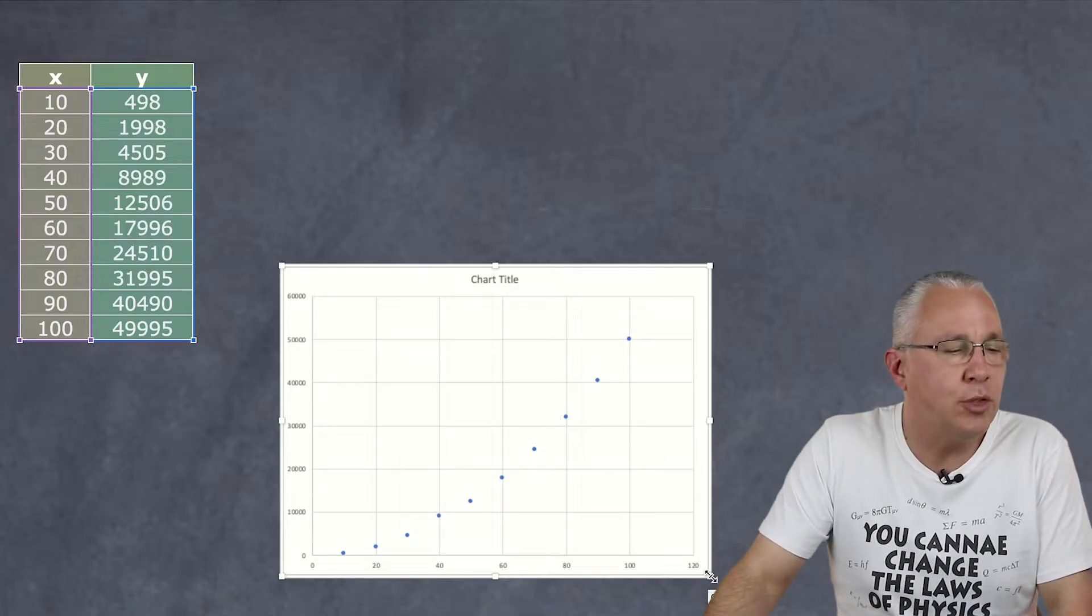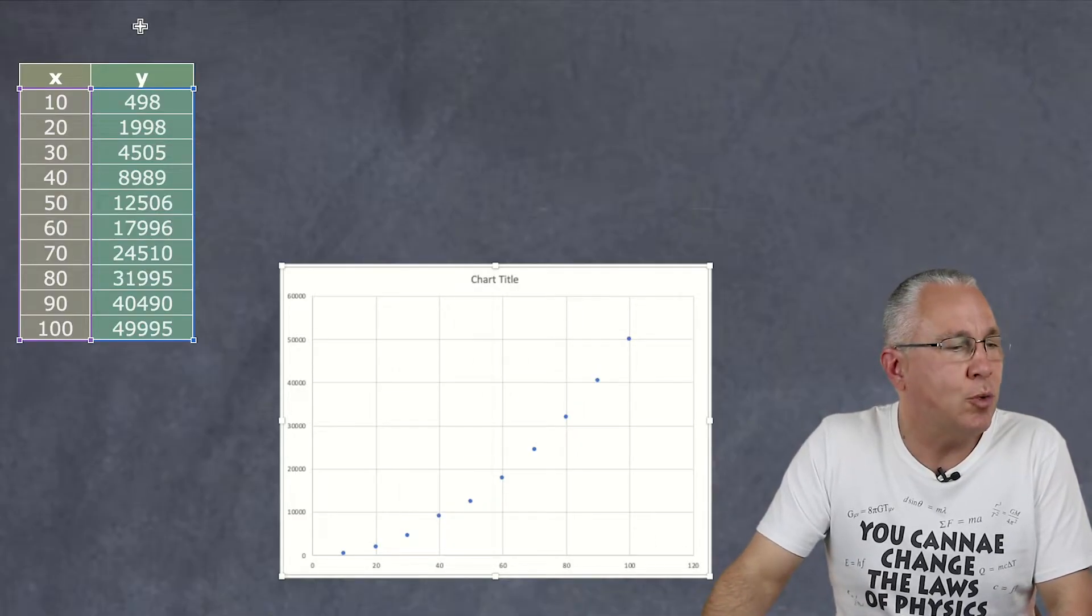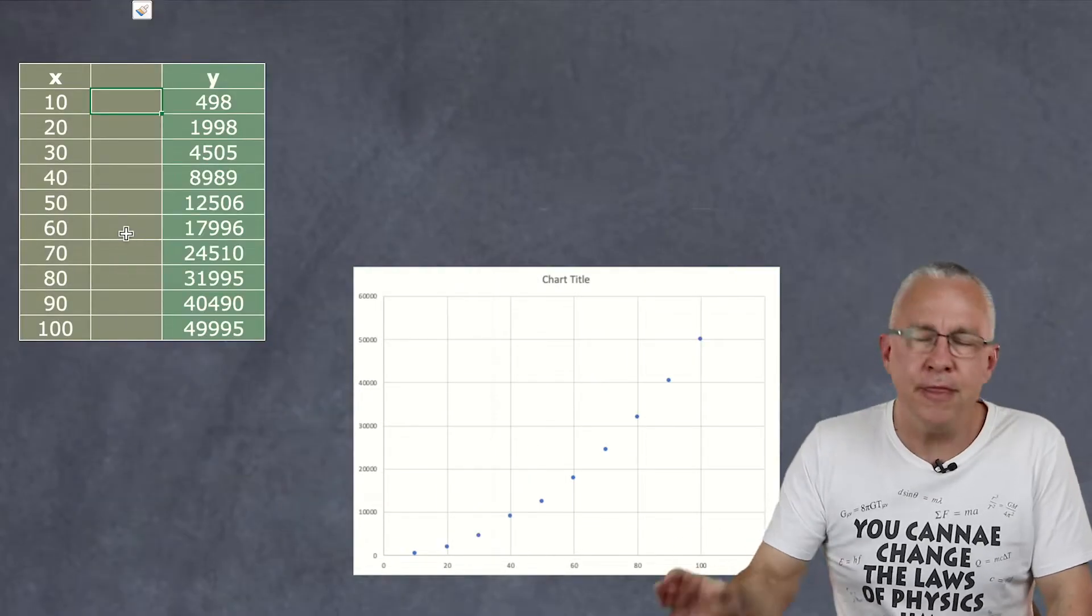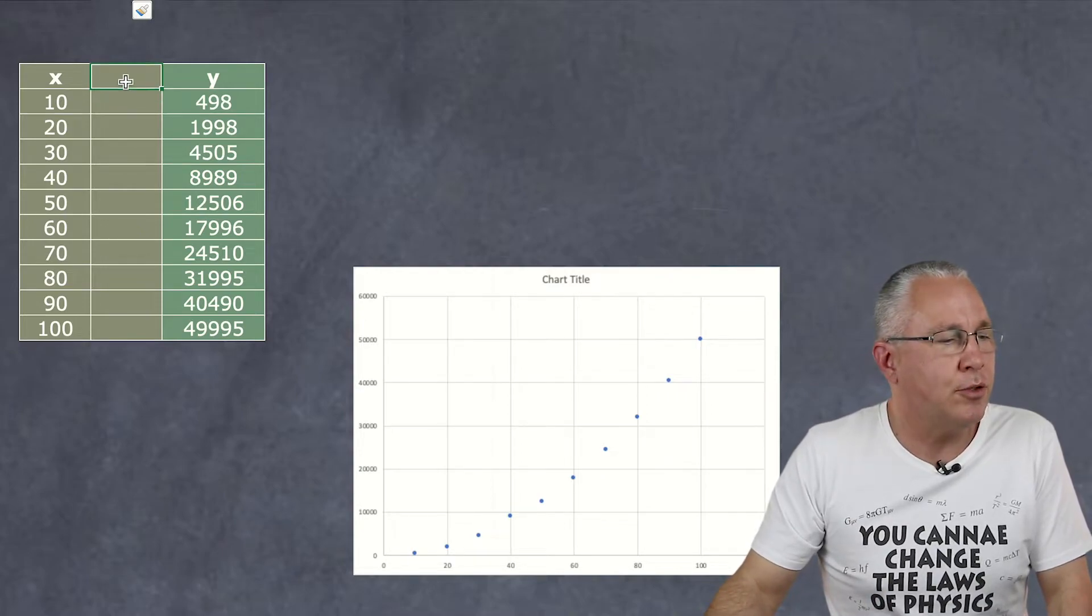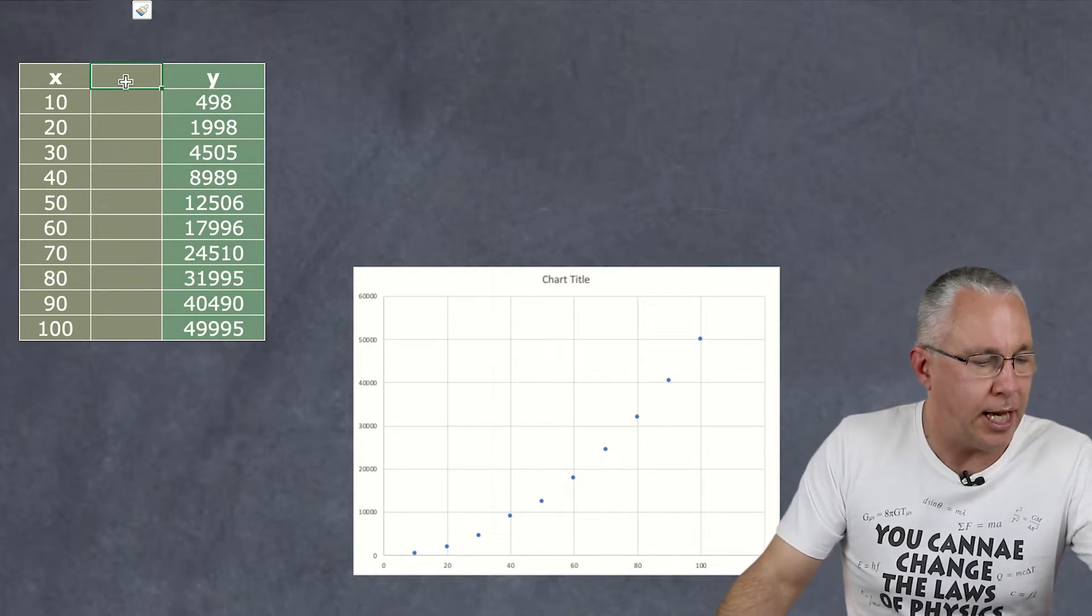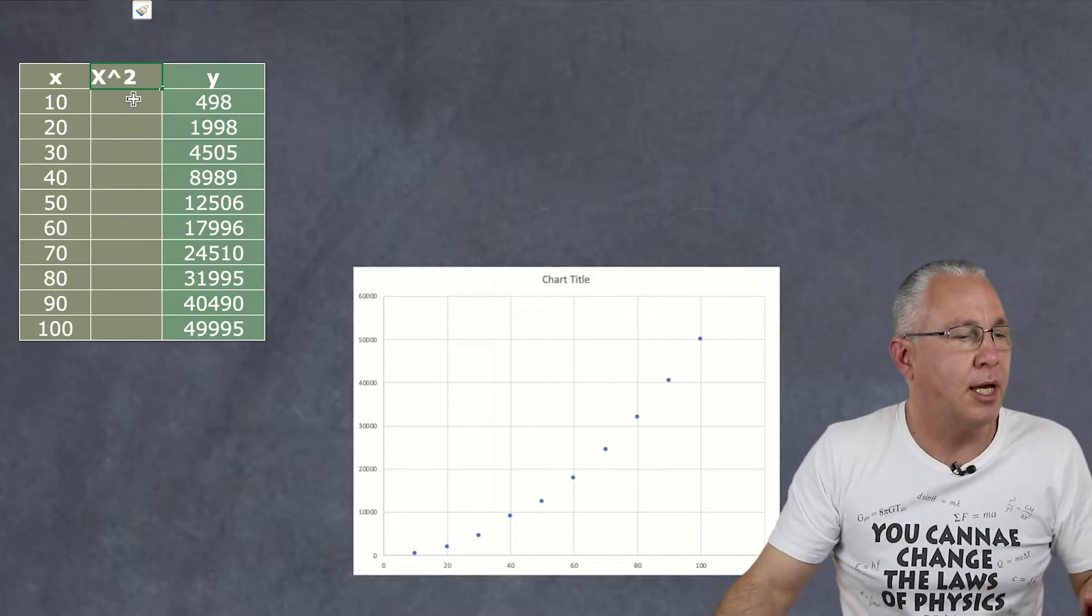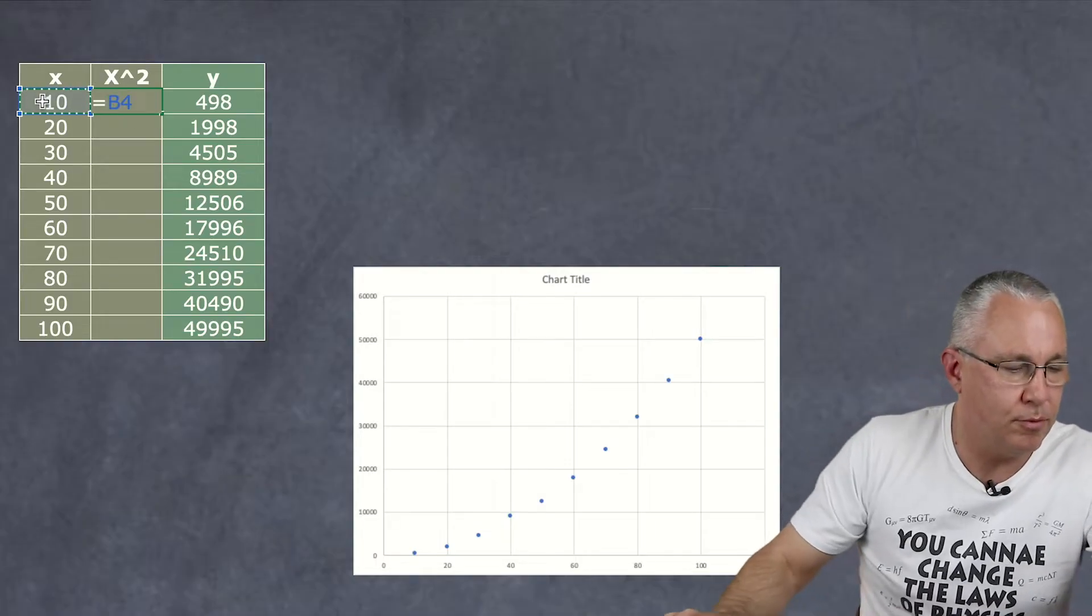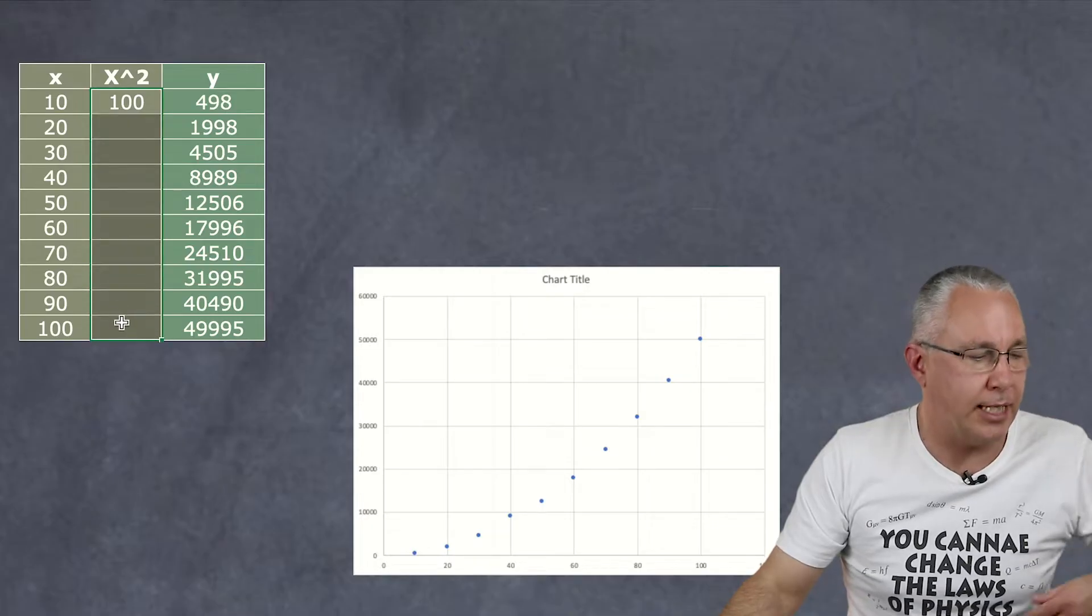Now what we first need to do is make a prediction what we think the data is doing. So what I do first is I create a new column. I think it's a square relationship. So the first thing that I do is I'm going to put in a square relationship option and then I'm going to say equals that value to the power of two and then I'm going to fill that down like so.